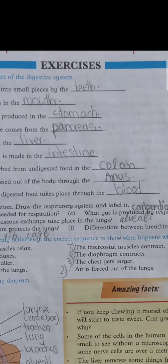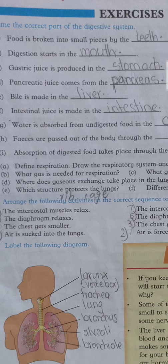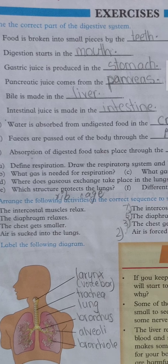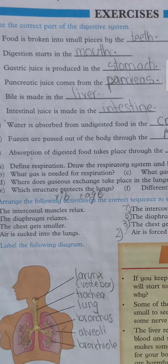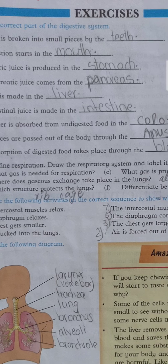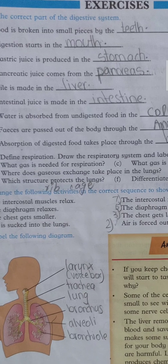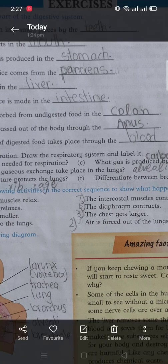Digestion starts in the mouth because food enters into the mouth. Gastric juice is produced in the stomach - wherever the word gastric comes, it means related to stomach. Pancreatic juice comes from the pancreas. Pancreatic is the word derived from pancreas. Bile is made in the liver. Bile is a green juice secreted by the liver. Intestinal...